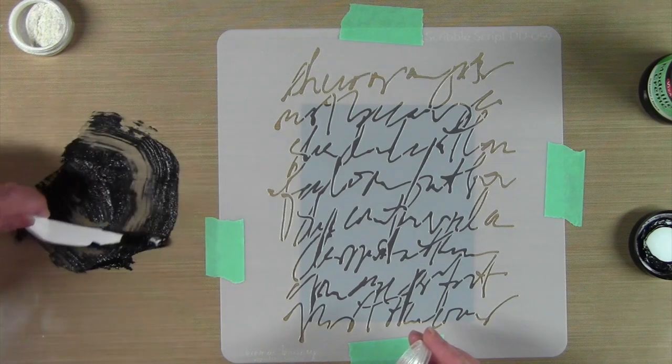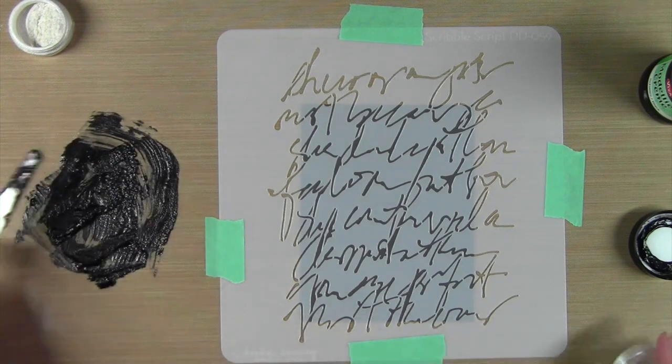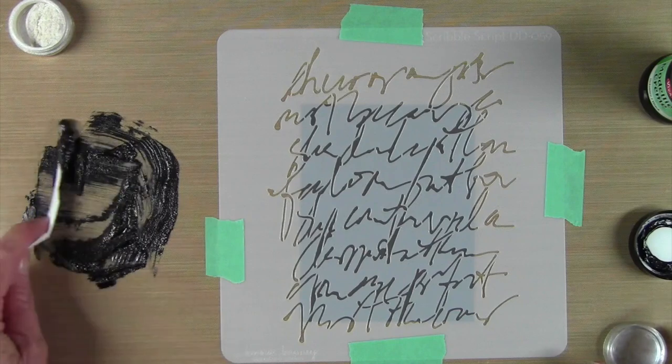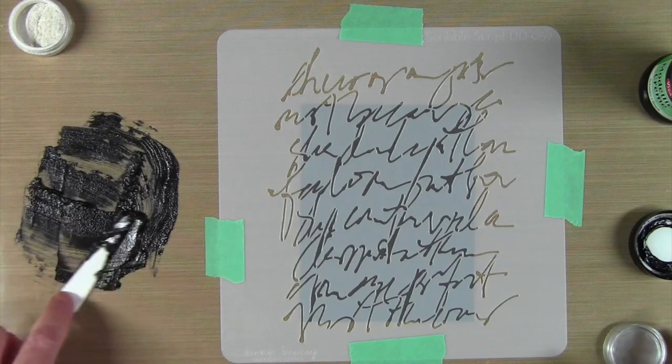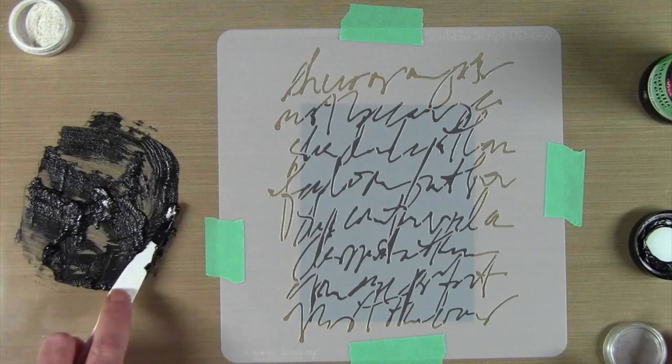There's a little bit of clumping in here. I want to smooth that out really well. I'll just be using my palette knife to kind of press down into the paste, and that smooths out all the little clumps.